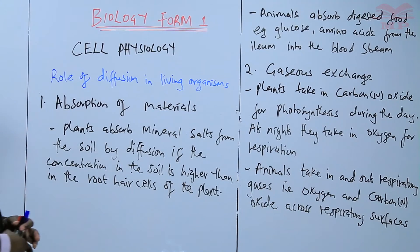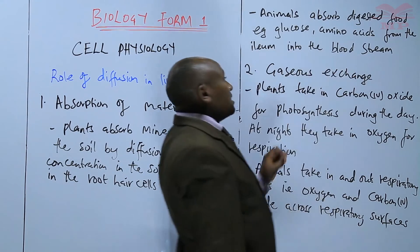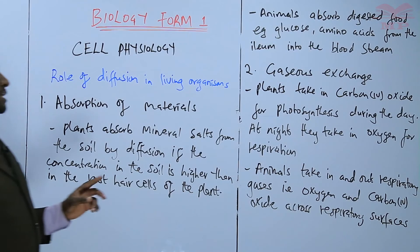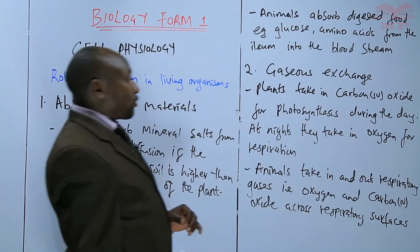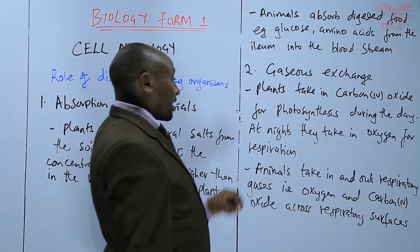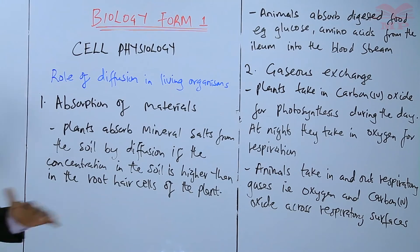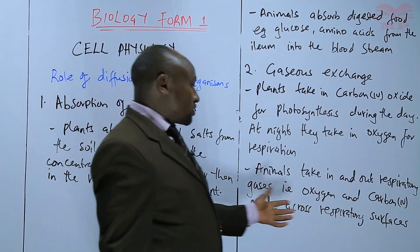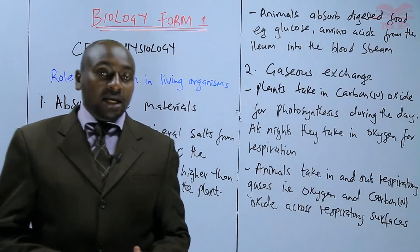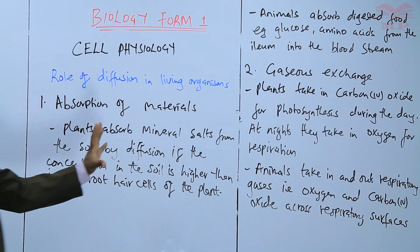So we have seen two major roles. One is the absorption of materials, whereby plants absorb minerals from the soil by diffusion and animals absorb digested food from the ileum into the blood. The second major function is gaseous exchange, whereby plants take in carbon dioxide for photosynthesis during the day, but at night they take in oxygen for respiration. Animals take in and out respiratory gases — oxygen and carbon dioxide — across respiratory surfaces.